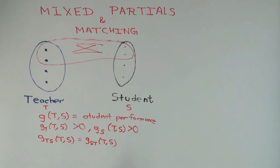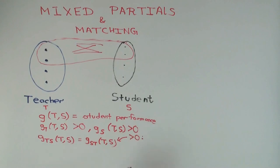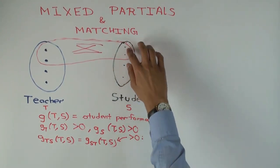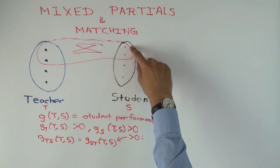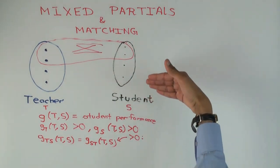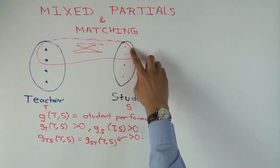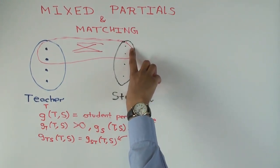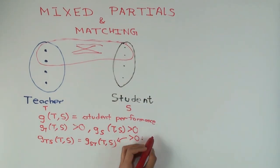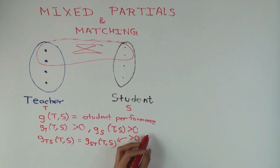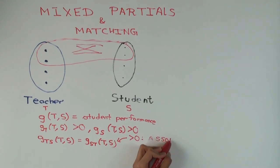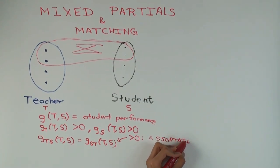So, if g_ts is greater than zero, that means better or higher-quality students benefit more from an upgrade in teacher quality. If it's greater than zero, then for maximizing total student performance, you get what we might call an assortative matching — you sort the best with the best. That gives positive matching.